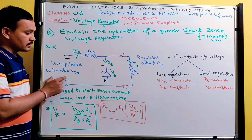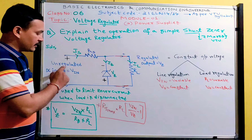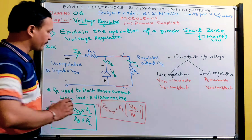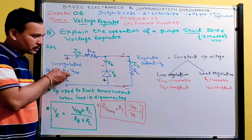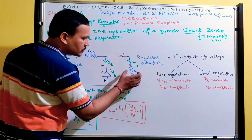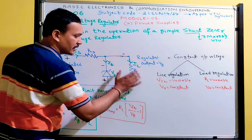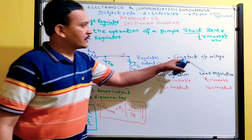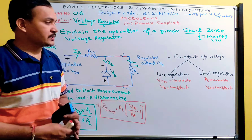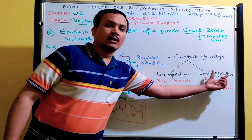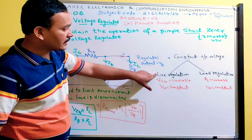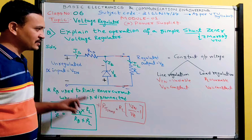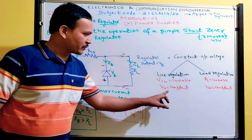The input here is unregulated DC input, denoted by VIN, with plus and minus. Variations will be there — like 10 volts to 20 volts; I can vary this voltage. So for any variations in this input voltage, the output voltage should remain constant. That is called regulated output, or constant output voltage.